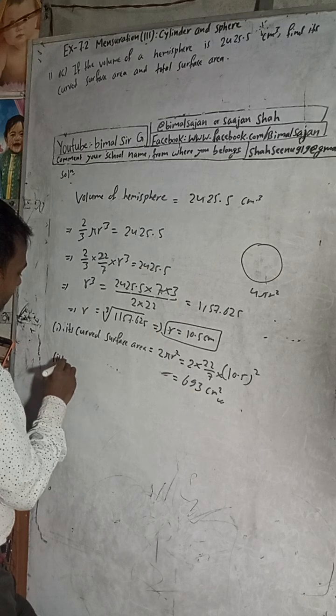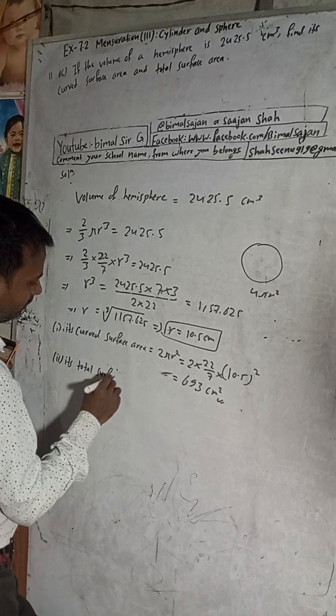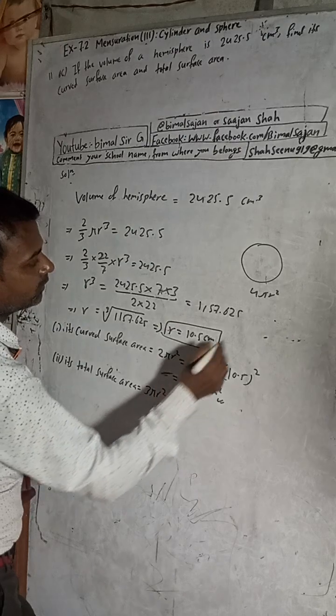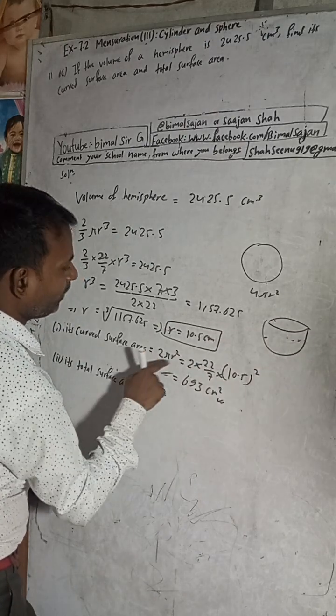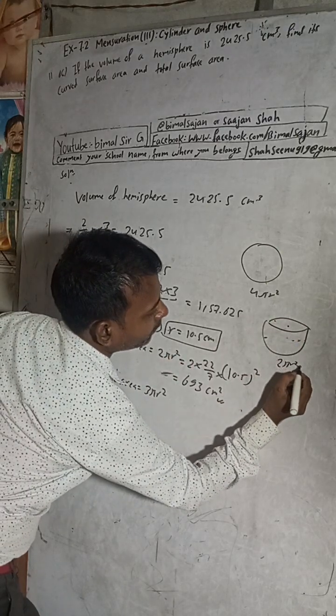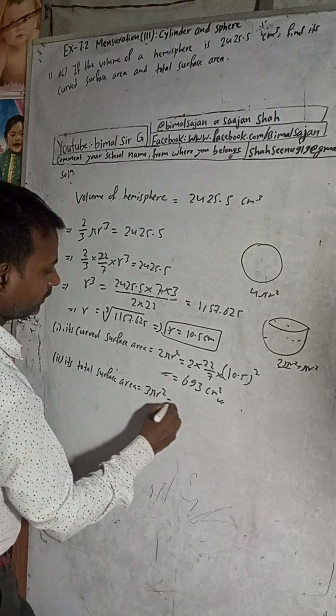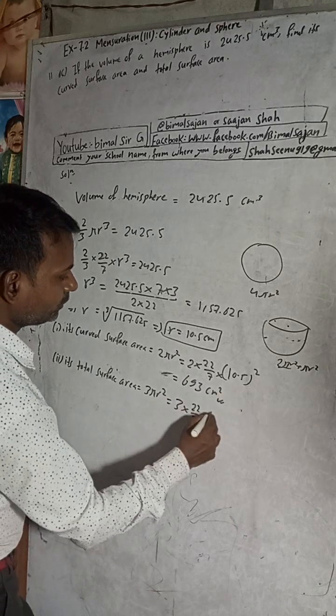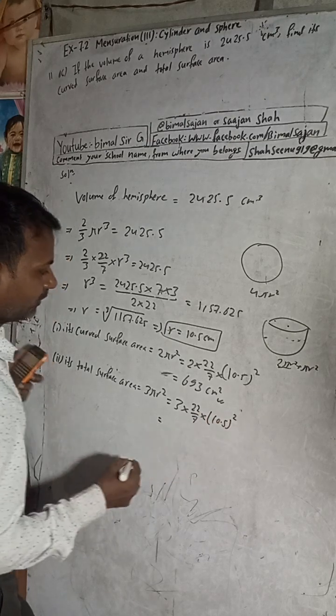The total surface area is equal to 3πr², because in the hemisphere the curved area is 2πr² and the base is πr², so together it's 3πr². So 3 times 22/7 times 10.5 squared.